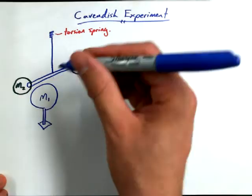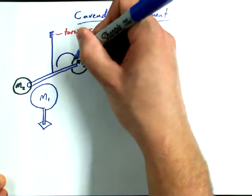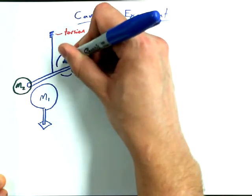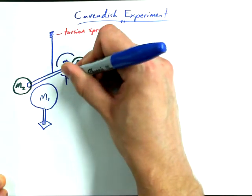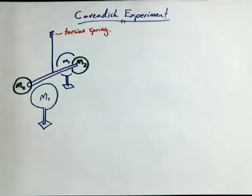And you know in the background I could have another mass one, also mounted on the floor and near mass two, just like mass one in the foreground is near the mass two that's in the foreground.